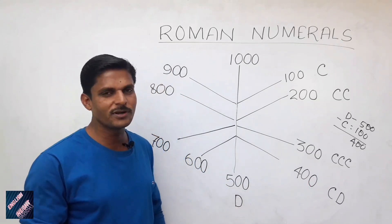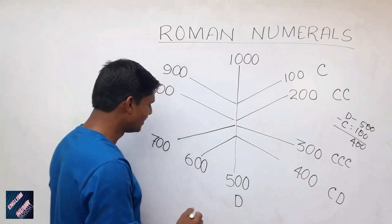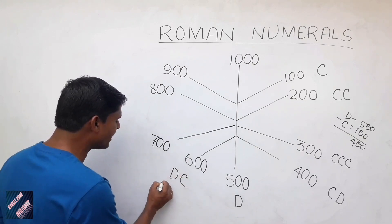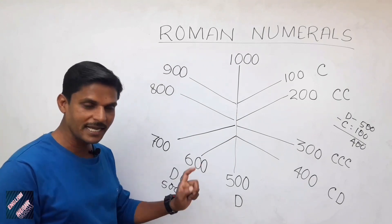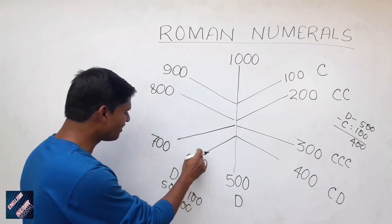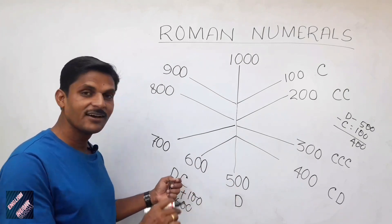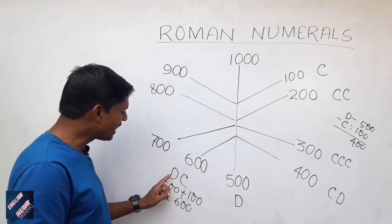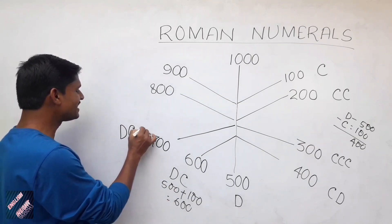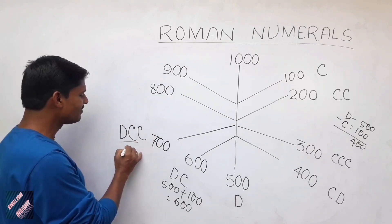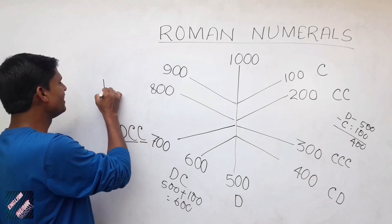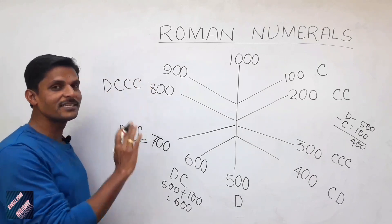So 500 is D. You must have guessed — 600 is DC. C is written after D, so D is 500 plus C which is 100, total 600. 700 is DCC — 600 plus another 100. 800 is DCCC.